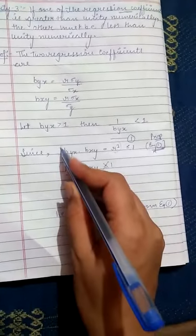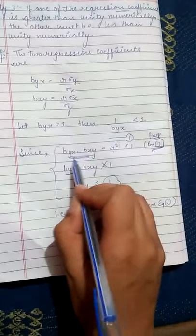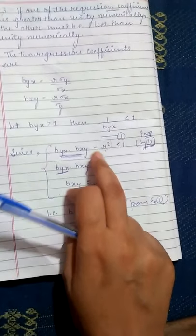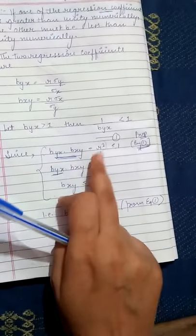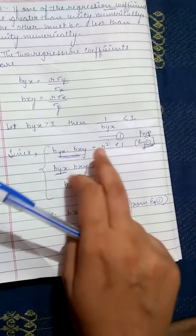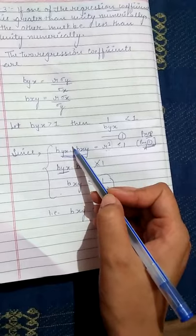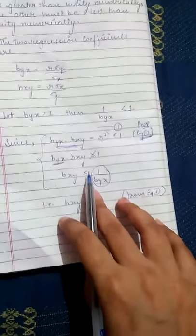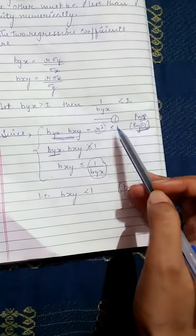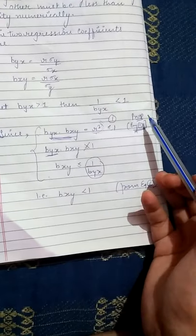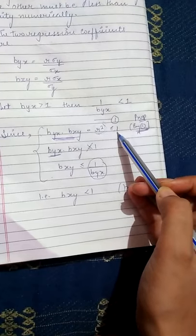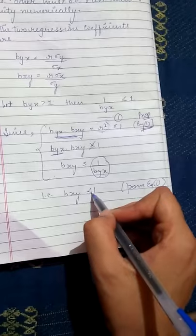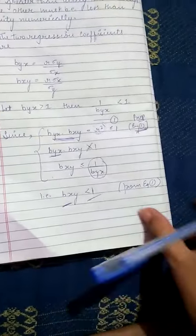To recap: if we have two regression coefficients whose product equals r² — because the geometric mean of the regression coefficients equals the correlation coefficient — and since r² ≤ 1 (as r ranges from −1 to 1), cross-multiplying shows that the second regression coefficient must be less than 1. This completes the proof of property number 3.